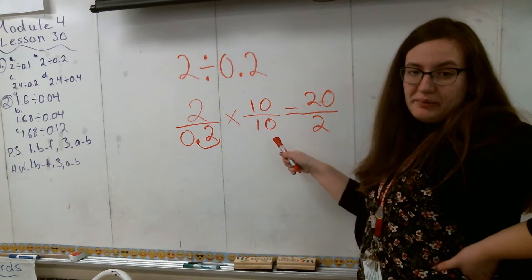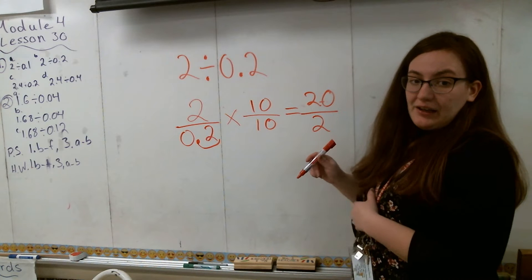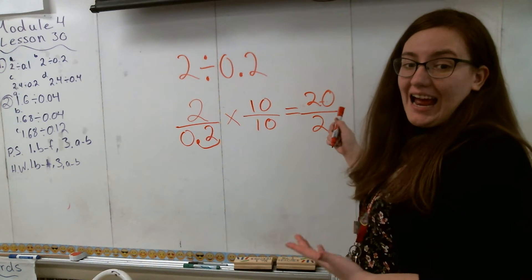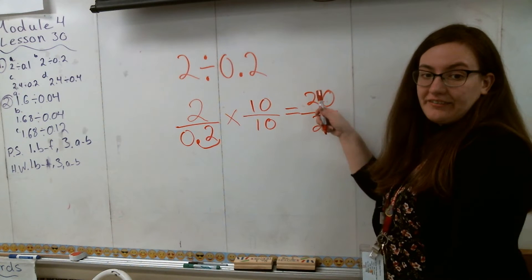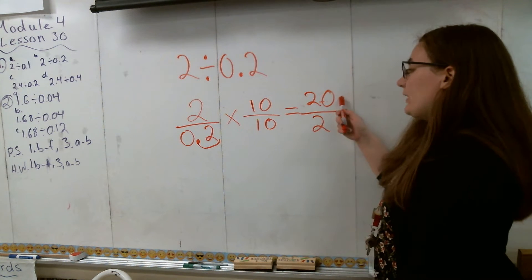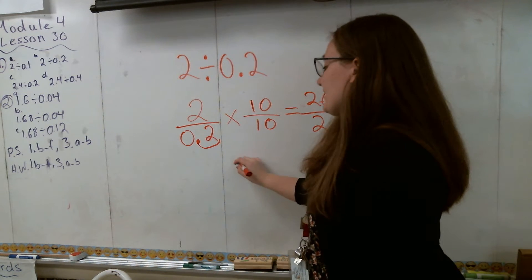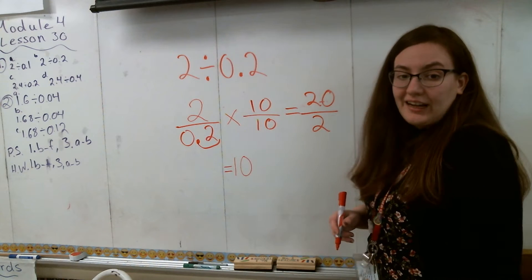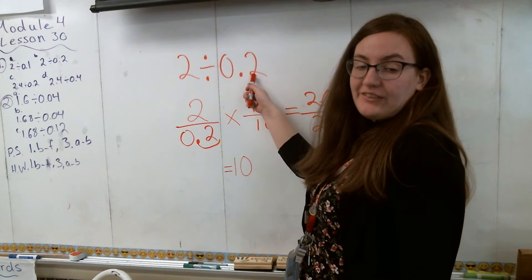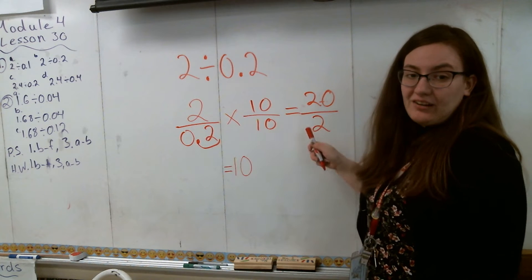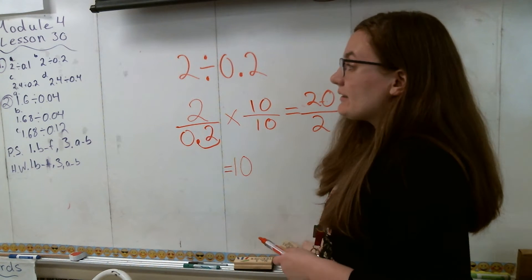Now I have 20 over 2. You may think you're done, but I want to think of this fraction as a division problem. So I say 20 divided by 2, and that is just 10. That is my final answer. To recap: put your expression into a fraction, multiply by the appropriate power of 10 based on the place value of the divisor, do the multiplication, then think of the resulting fraction as a division problem to get your answer. Our final answer is 10.